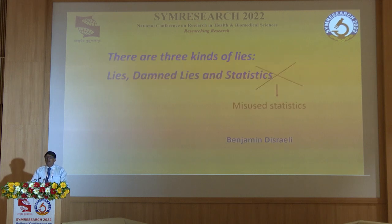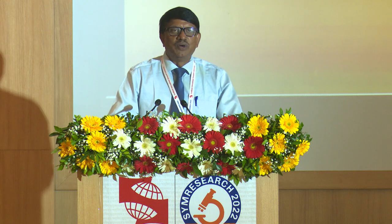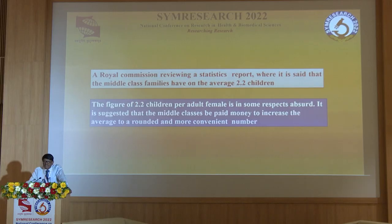You should also interpret results correctly. Sometimes when you get decimals, people get confused — why have 2.2 deaths or 3.5 deaths occurred? The same thing happened to the health minister of England. A royal commission report stated that middle-class families have on average 2.2 children. He was very upset: how can a family have 2.2 children? They constituted a committee, which said the figure of 2.2 is in some respect absurd and suggested paying middle-class families to increase the average to a rounded number. So you will get decimals — don't bother.